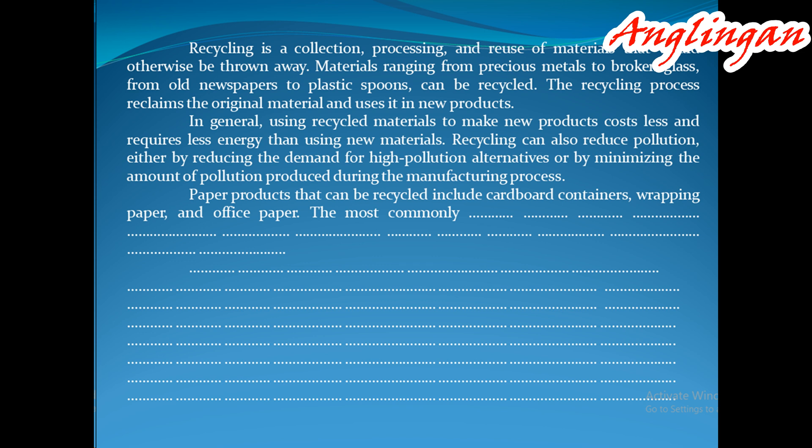The most commonly recycled paper product is newsprint. In newspaper recycling, old newspapers are collected and searched for contaminants such as plastic bags and aluminum foil. The paper goes to a processing plant where it is mixed with hot water and turned into pulp in a machine that works much like a big kitchen blender. The pulp is screened and filtered to remove smaller contaminants. The pulp then goes to a large vat where the ink separates from the paper fibers and floats to the surface.